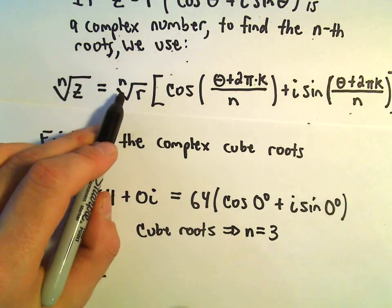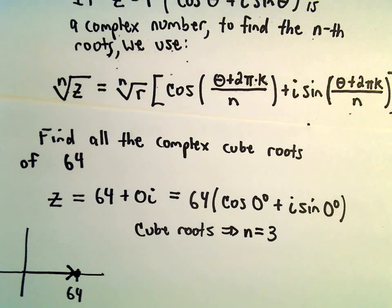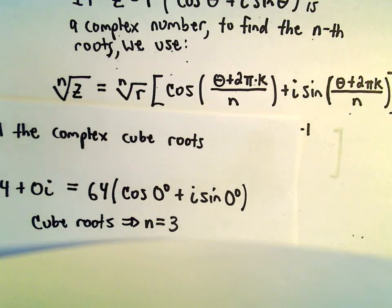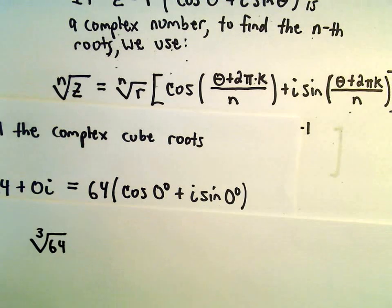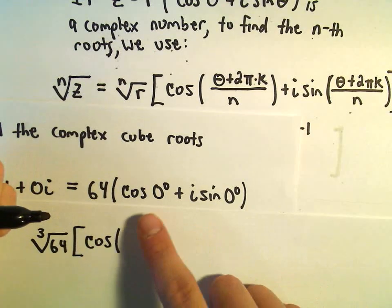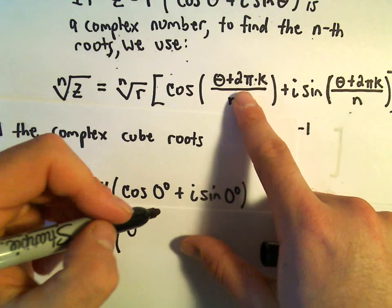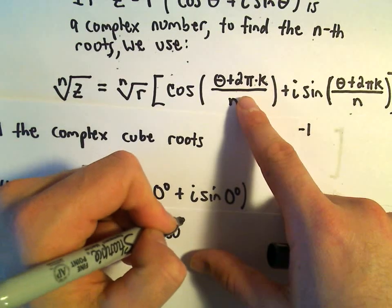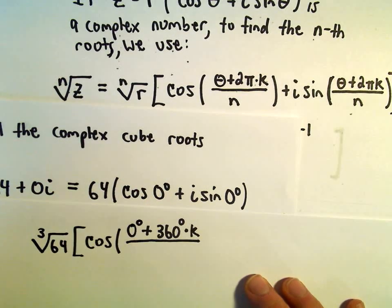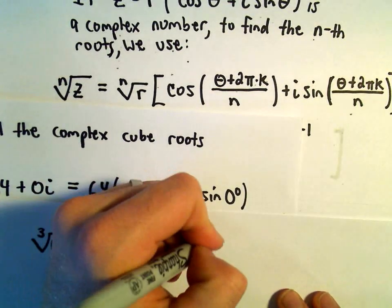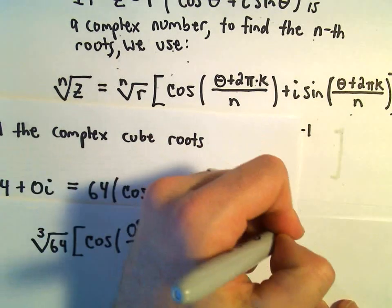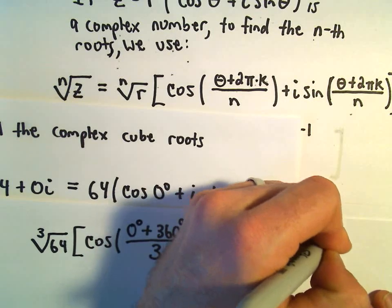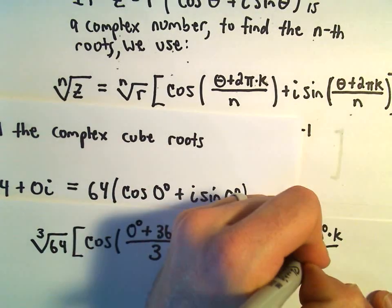It says we would take our r value and take the cube root of that. So using our formula, it says we would get the third root of 64. And then it says we would take cosine of the original angle, which is 0 degrees, plus 2 pi, or equivalently 360 degrees, times k, all over our n value, plus i sine of the same quantity. So we'll get 0 degrees plus 360 degrees times k all over 3.